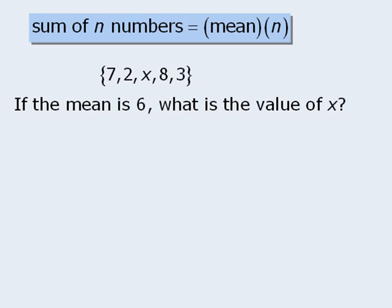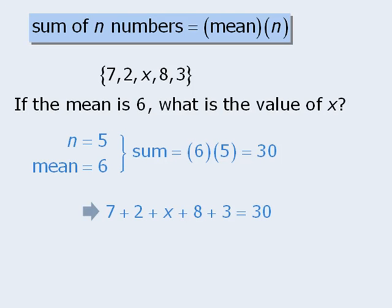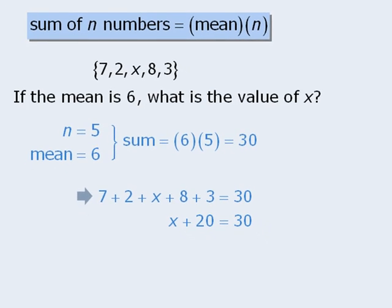When we apply our formula, the sum of the numbers equals 6 times 5, which is 30. So if the sum of the five numbers is 30, we can now write the following equation. When we solve this equation for x, we get x equals 10, so the mystery number here is 10.